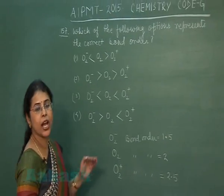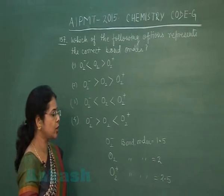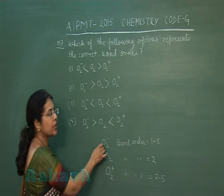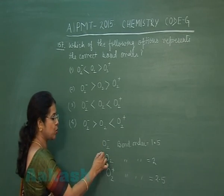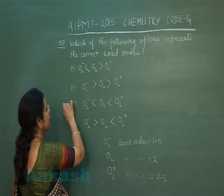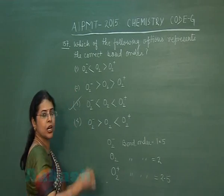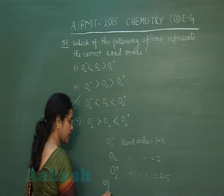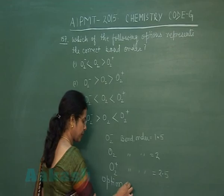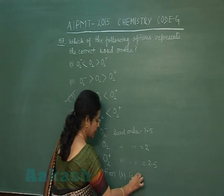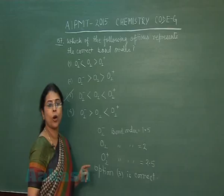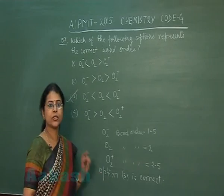So we need to find the correct or increasing order. The bond order of O₂⁻ should be minimum, then O₂, then O₂⁺. Looking at the given options, the third option is the correct one — option 3 is correct.